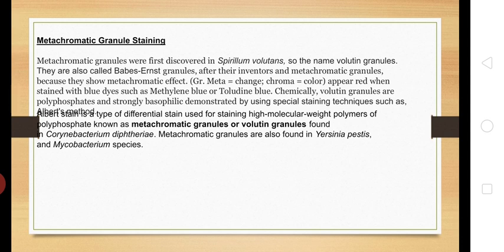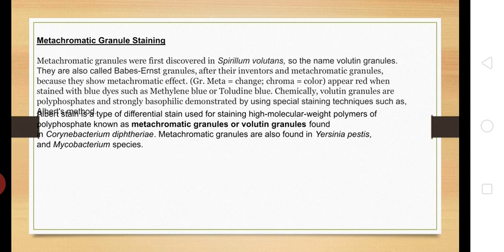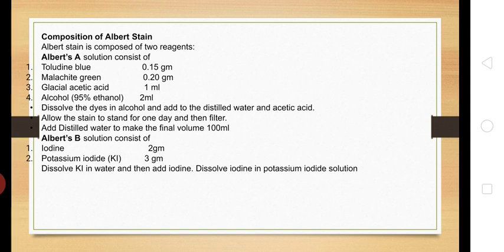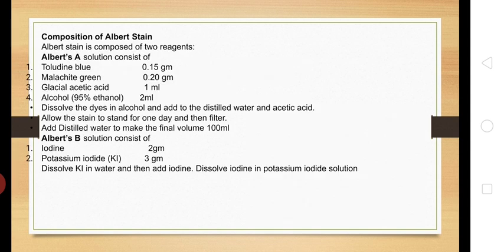Now we will see how to perform metachromatic granule staining. The method used is Albert staining. In the Albert staining we use Albert solution, which contains toluidine blue and malachite green, mixed with glacial acetic acid and alcohol. This is Albert A solution. Albert B solution consists of iodine and potassium iodide.